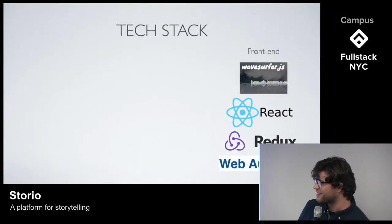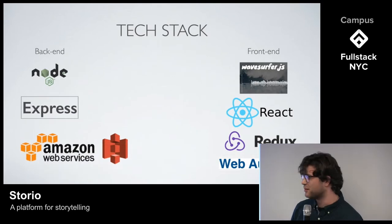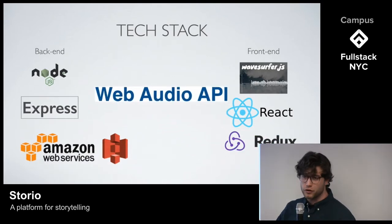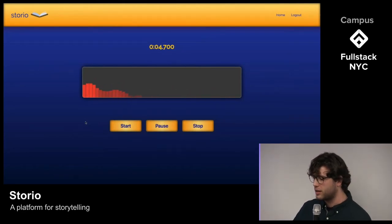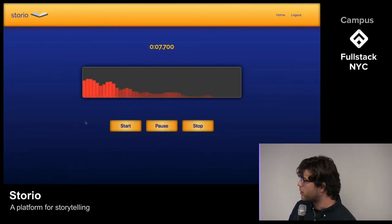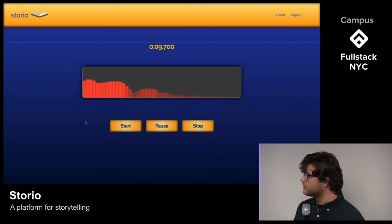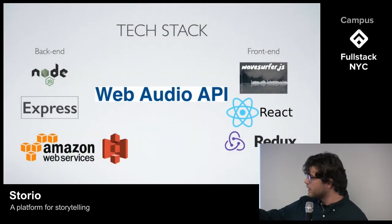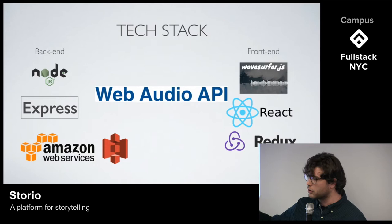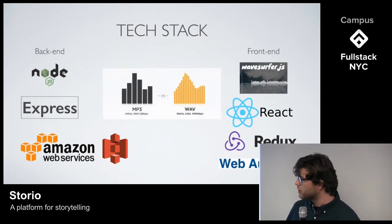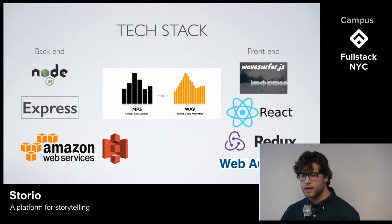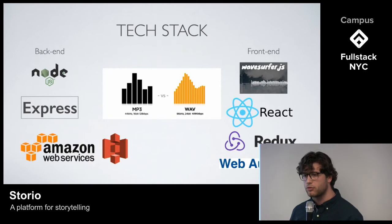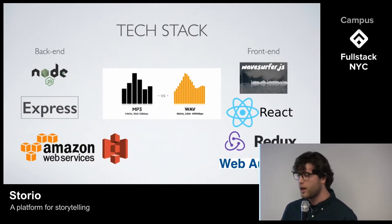I'll discuss some of the technology we used to build Storio. The first view you come to when using the app is the recorder. To build the recorder, we tap into the Web Audio API, and that gives us access to the user's microphone. Here we have a visualizer built around an analyzer node. One of the challenges we had is that the default encoding format for the Web Audio API is WAV, and for faster uploads and downloads, we used the lame MP3 library to convert that to MP3.